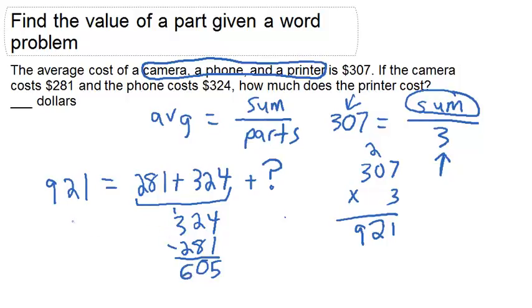If we then subtract those $605 from the total for all three, we would be able to figure out the cost of the printer. We can see that the printer costs exactly $316.